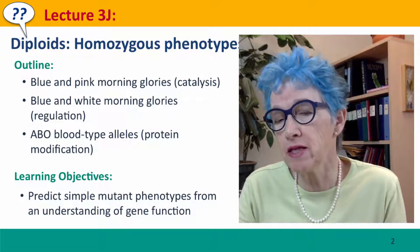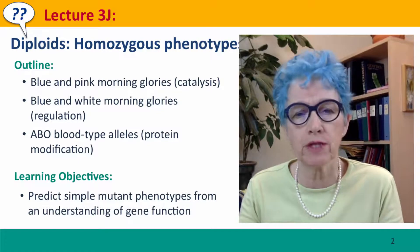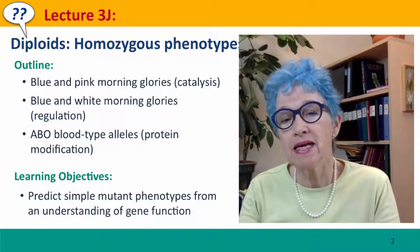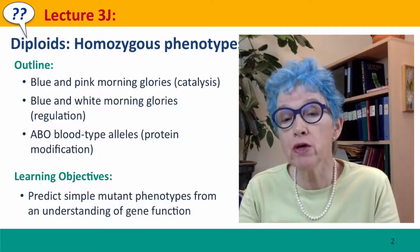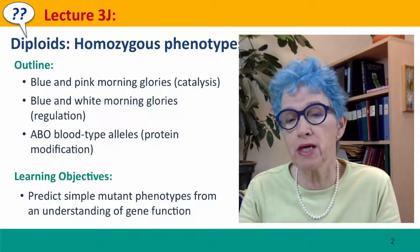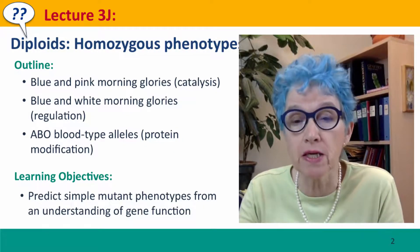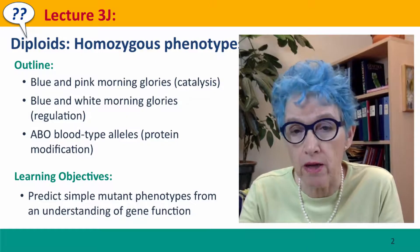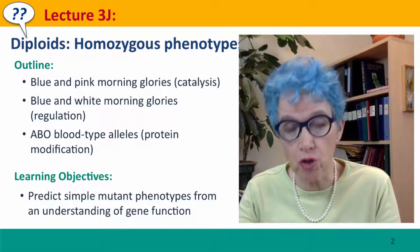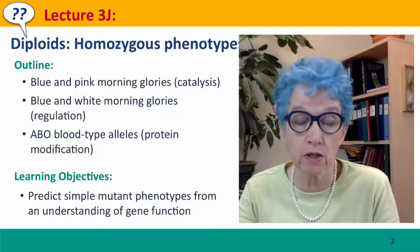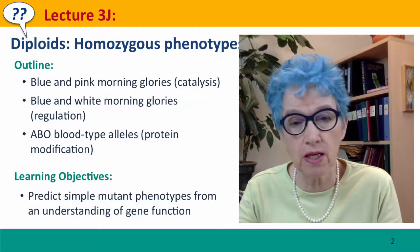So until now in this module, we've been thinking about what proteins are and what proteins do. In this and the subsequent lectures in the rest of this module, we're going to move forward to connecting what proteins do with ultimately organismal phenotypes and the genotypes that underlie these. In this lecture, we're starting with thinking about homozygous phenotypes in diploid organisms, and we'll continue this in the next lecture.